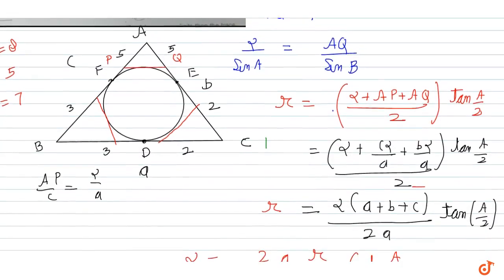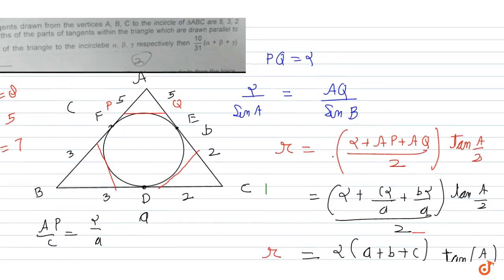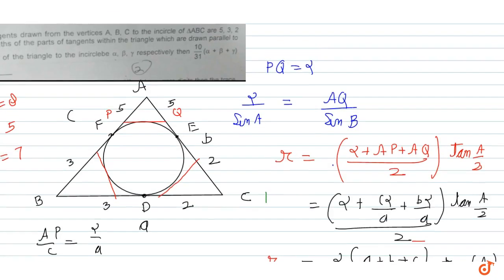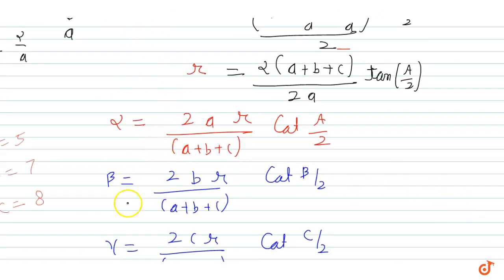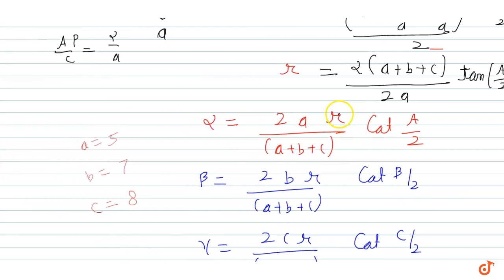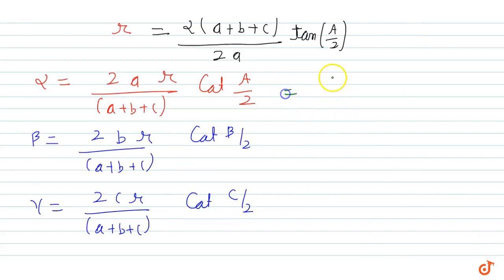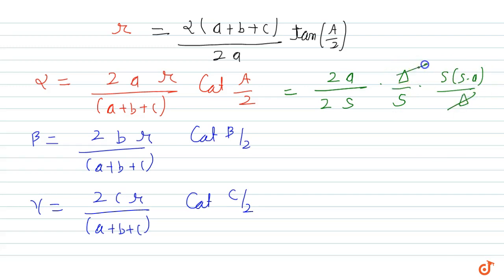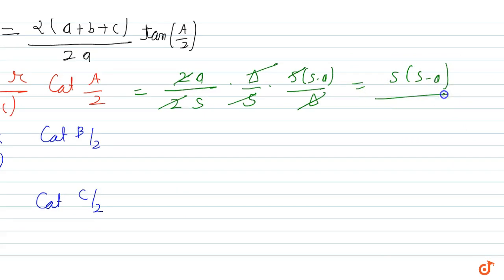Now, a = 5, b = 5 + 2 = 7, c = 5 + 3 = 8. r is equal to delta upon s. So our expression: 2a upon (a + b + c) = 2s, times r = delta/s, times cot(A/2) = s(s−a)/delta. After cancellation, alpha = s(s−a)/delta × something. Combining all three: the sum alpha + beta + gamma has a common denominator of s, and the numerator becomes s(s−a) + s(s−b) + s(s−c) upon delta.